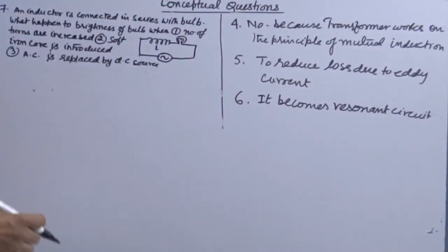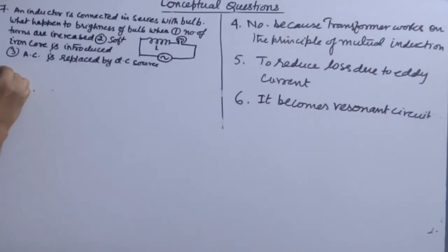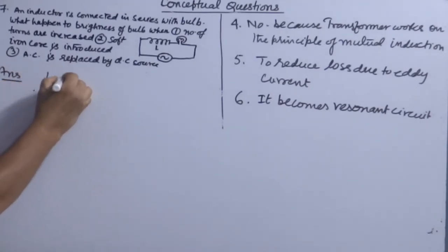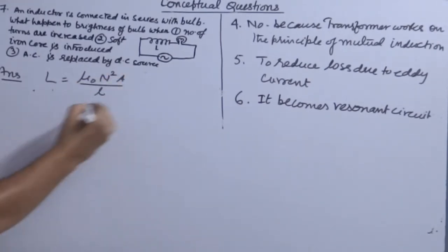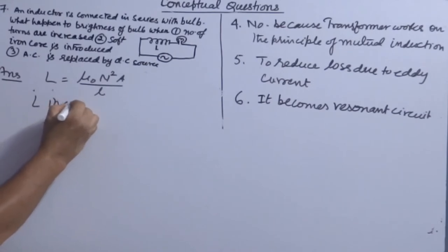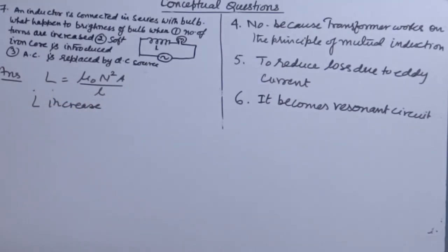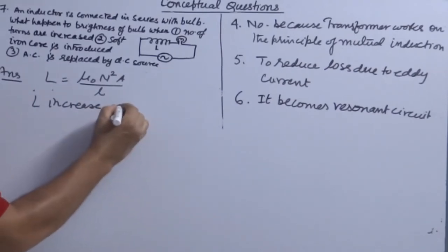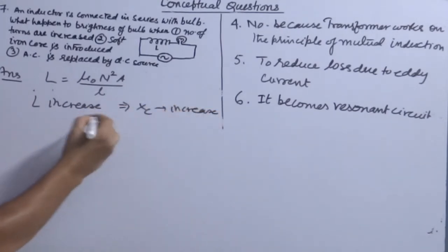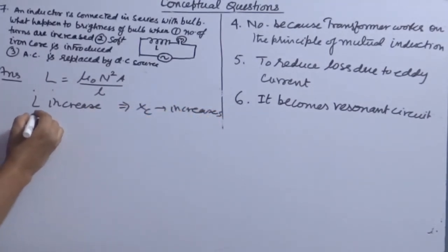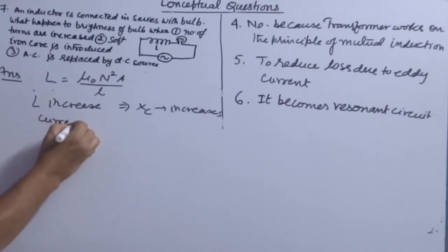Question number seven: an inductor is connected in series with a bulb. What happens to the brightness of the bulb when the number of turns is increased? L = μ₀N²A/l. When you increase the number of turns, L increases. This means XL increases, which means current decreases.